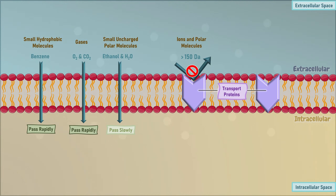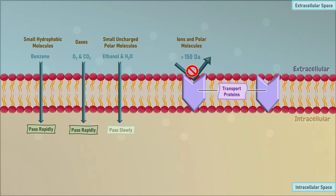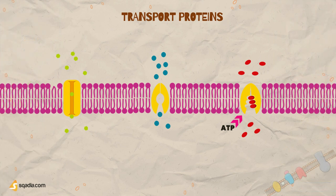These membrane transport proteins are highly specific and selective for ions and other larger molecules that transport across membranes. These proteins controlling membrane permeability fall into three broad classes: pumps, carriers, and channels.